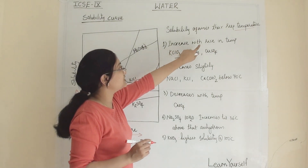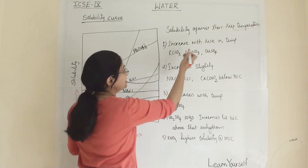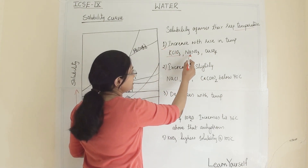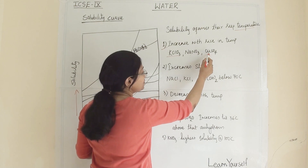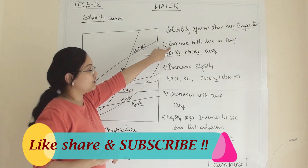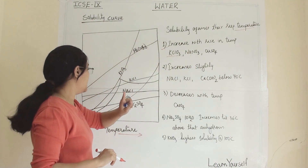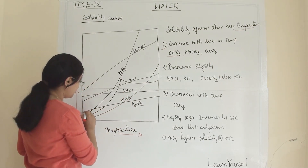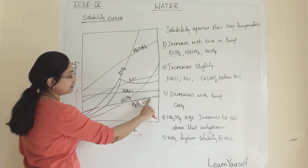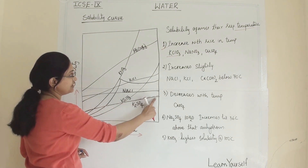The first category is salts that increase in solubility with a rise in temperature. Examples of this behavior are KClO₃, NaClO₃, and CuSO₄. You can see from the curve of KClO₃ that solubility clearly increases as temperature increases.